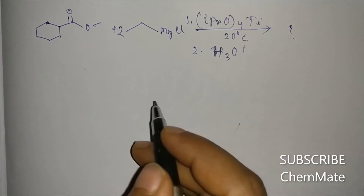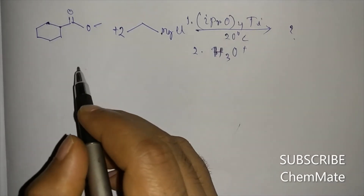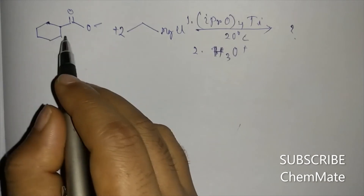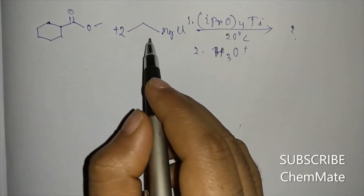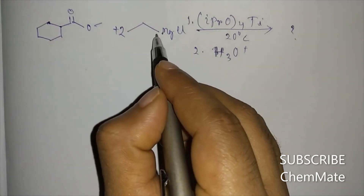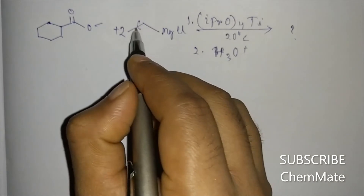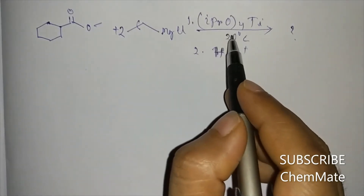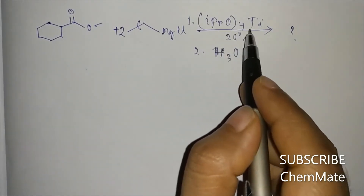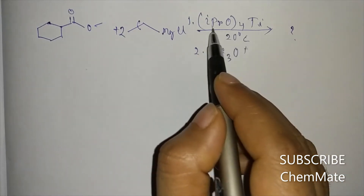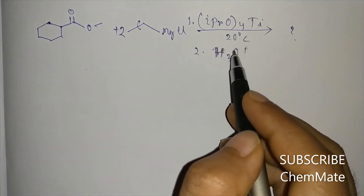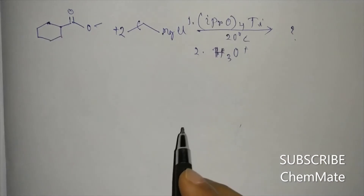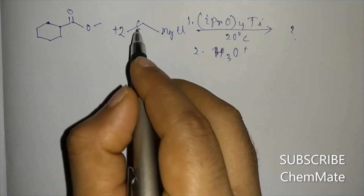Here is a very interesting question. This is an ester which is treated with two equivalents of Grignard reagent in the presence of titanium isopropoxide catalyst at 20 degrees centigrade. What will be the product?